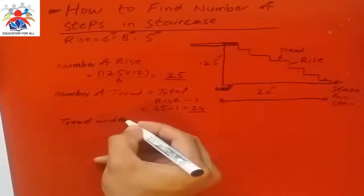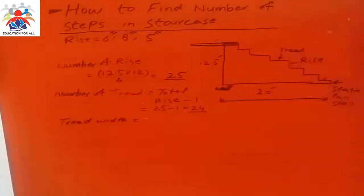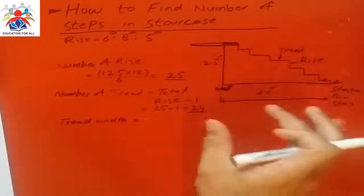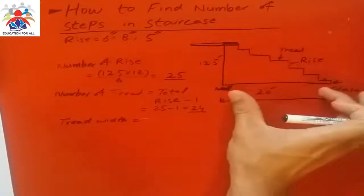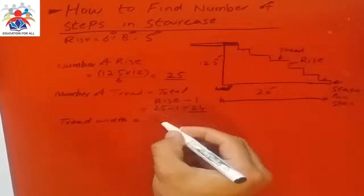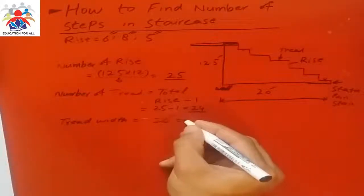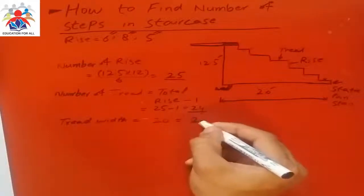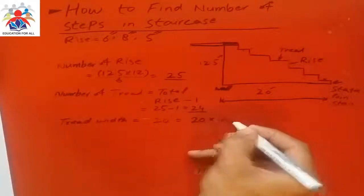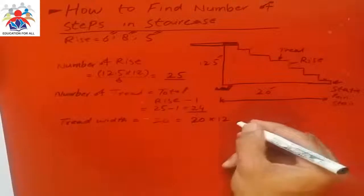Remember, we have 20 feet on the floor, so 20 feet needs to be converted into inches: 20 multiplied by 12, so it will give you 240 inches.